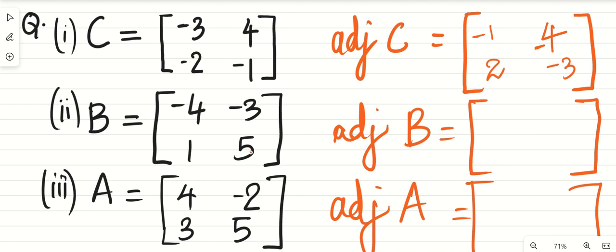Now here, these elements will interchange - so five here, minus four here. Four here - it will be four. These will change their sign, so minus three, plus two.